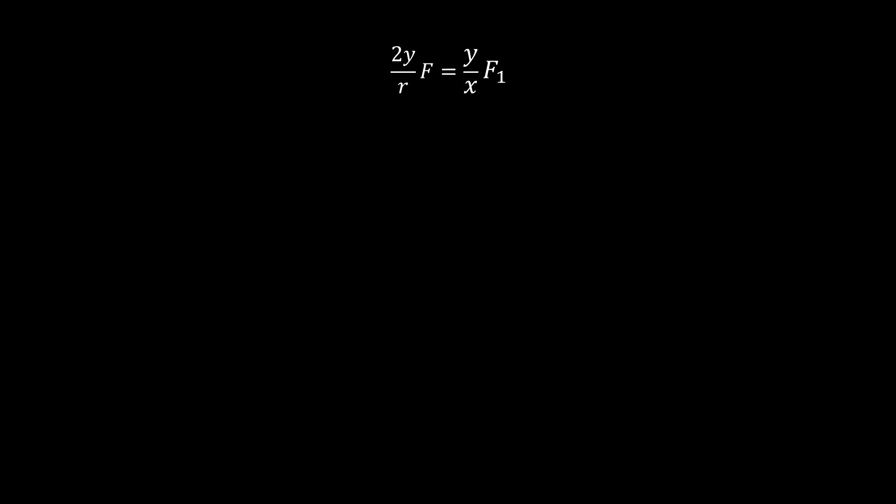Let's substitute the value of F and F1. We get the equation as 2 upon r times 1 upon 4 pi epsilon 0 times q square upon r square equals 1 upon x times 1 upon 4 pi epsilon 0 times q square upon x square.